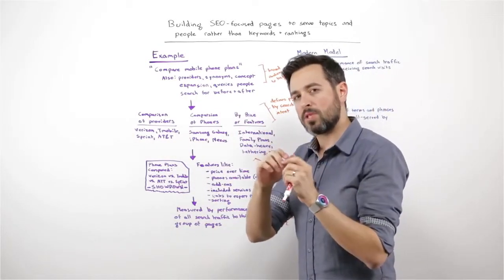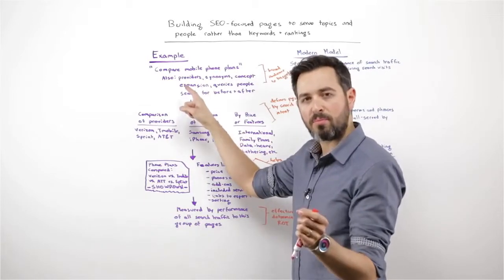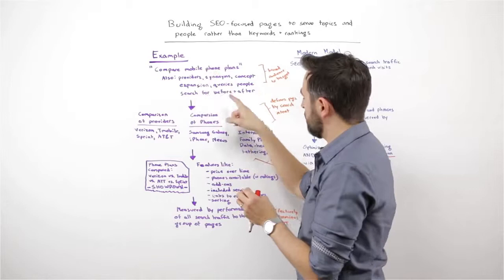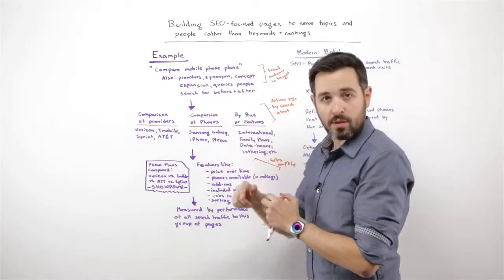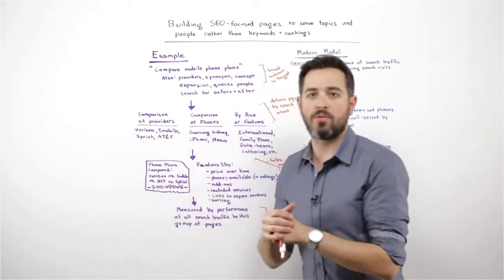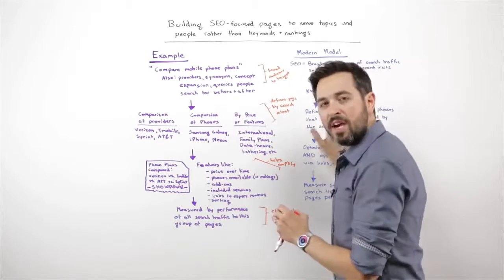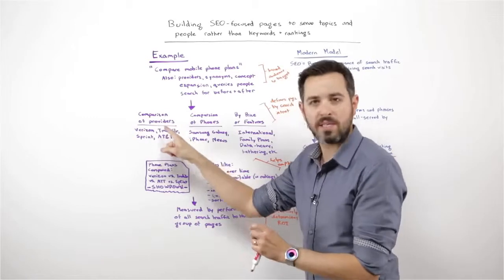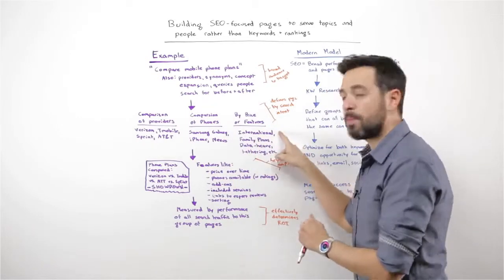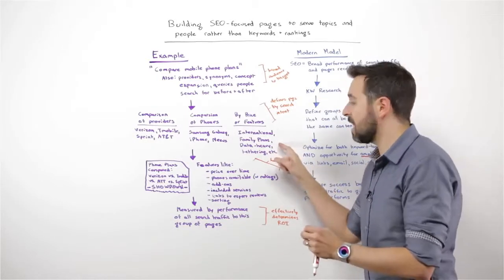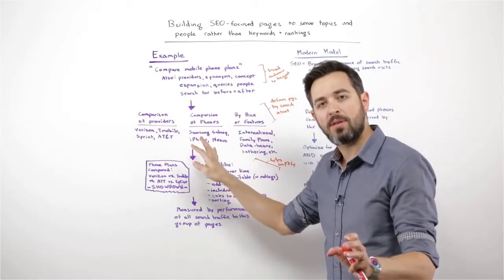So I'll do some keyword research and some subject matter research. Maybe I'll talk to some experts and some consumers, and I'll see: providers — they're looking for different phone providers; they might use synonyms of these different terms; I might do some concept expansion as I'm doing my keyword research; maybe I'm looking for queries that people search for before and after — so after they make the determination that they like a particular provider, they go look at phones, or after they determine they like a phone, they want to see which provider offers it. So now I'm going to do this definition of groups of keywords: comparison of providers — Verizon, T-Mobile, Sprint, AT&T; comparison of phones — Galaxy, iPhone, Nexus; by price or features — international calling, family plans, travel, data-heavy usage, tethering. This is what's defining the pages I might build by the searcher's intent.